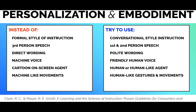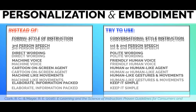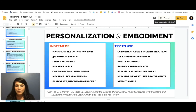Instead of machine-like movement, if you have an agent you want it to have human-like gestures and movement — that's the embodiment principle. And finally, for all of these principles we're studying, instead of making content elaborate and information-packed with lots of bells and whistles, try to keep it as simple as possible. It seems that throughout all of our studying, you want to keep it simple so that students can learn as effectively as possible and retain as much information as possible.